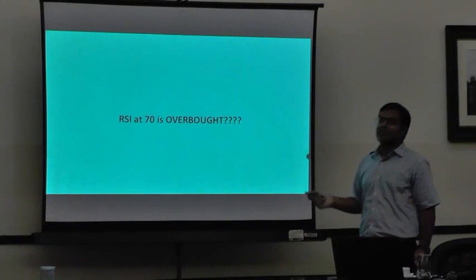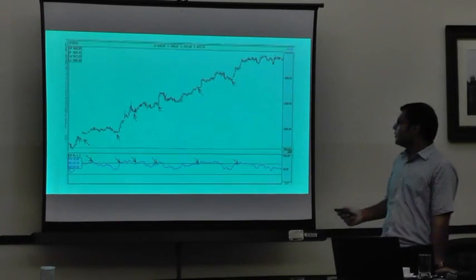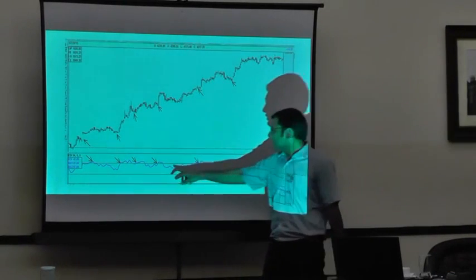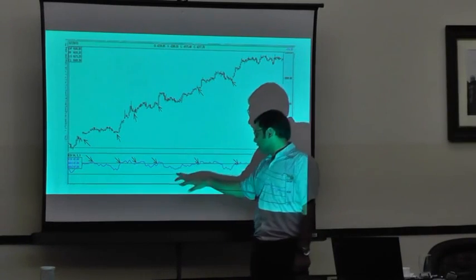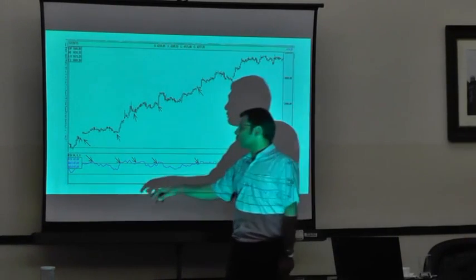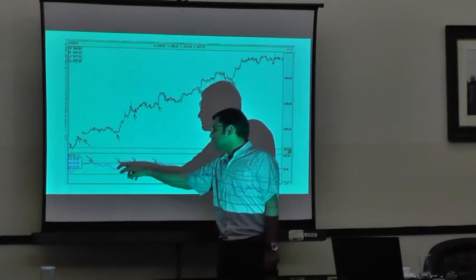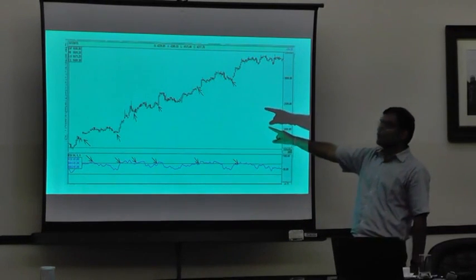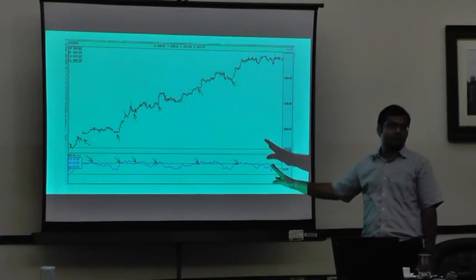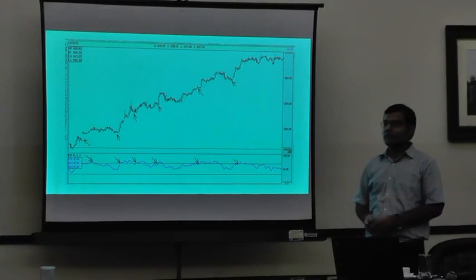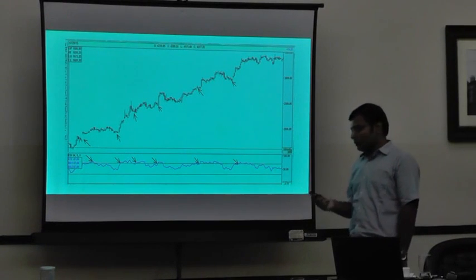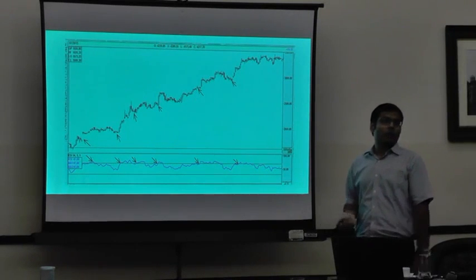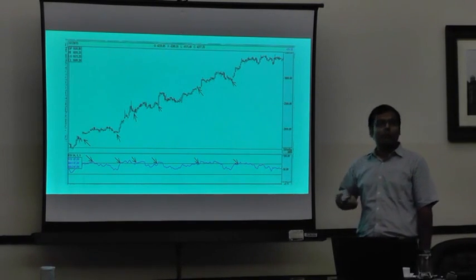We think that RSI at 70 is overbought. Now, this is the chart where I have put — the upper line is the 70 line, and the lower line is the 30 line. Whenever RSI has touched the 70 line, prices have made higher bottoms. So it is not really overbought — overbought means more people are buying.